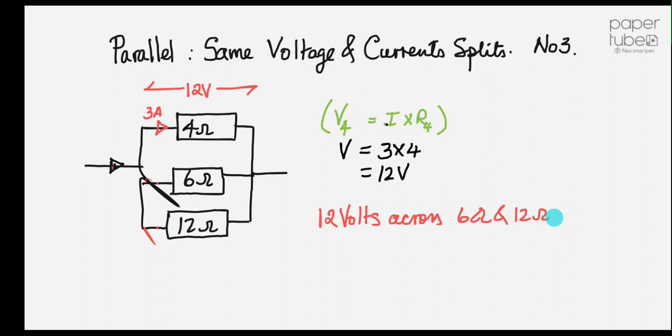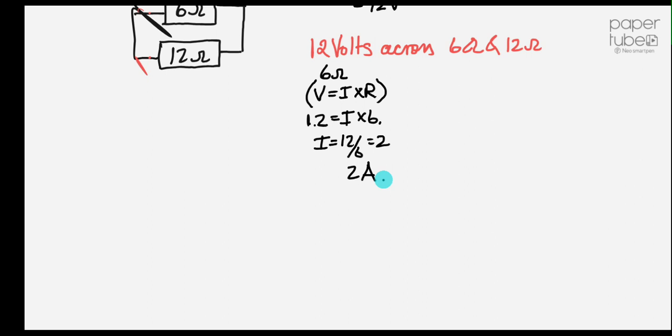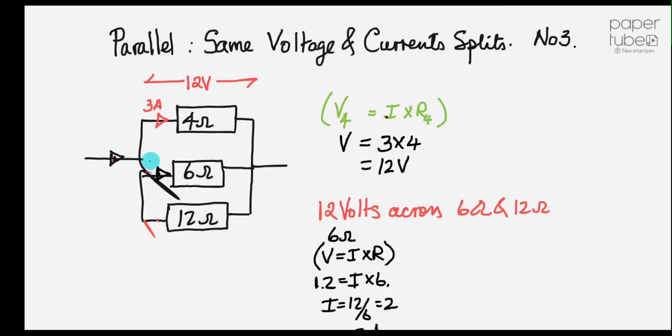So now I'm going to look at the 6 ohm resistor and I'm going to find the voltage across it is equal to the current times the resistance. I know there's 12 volts across it because they all have the same voltage, times the current I don't know, by 6. So some number by 6 gives me 12. So 12 divided by 6 gives me the number. So it's 2 amperes, because current is measured in amperes. So there must be 2 amperes flowing in that.